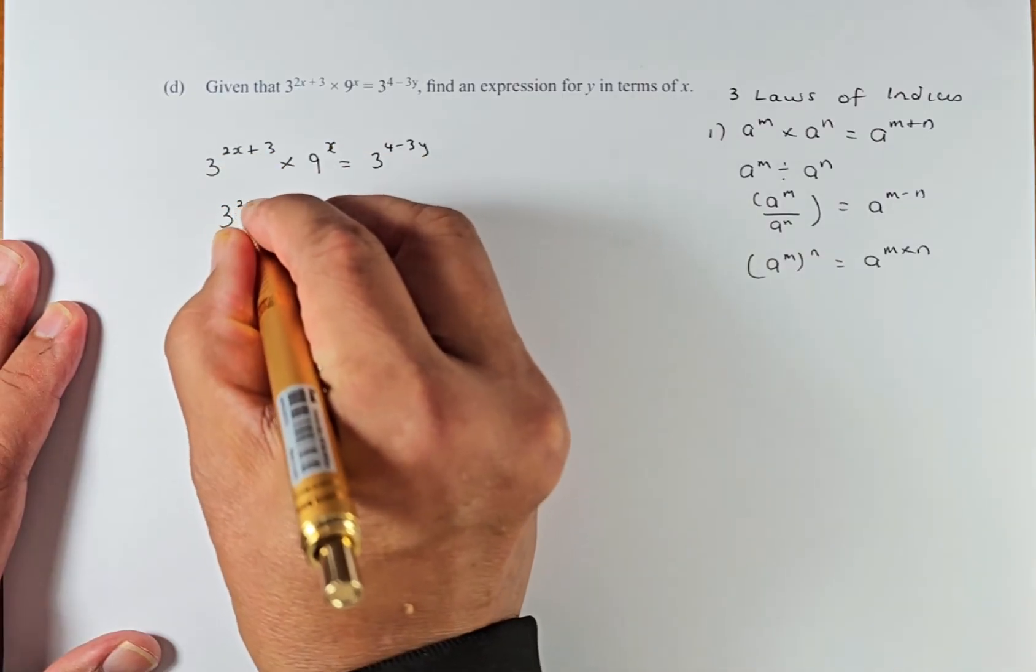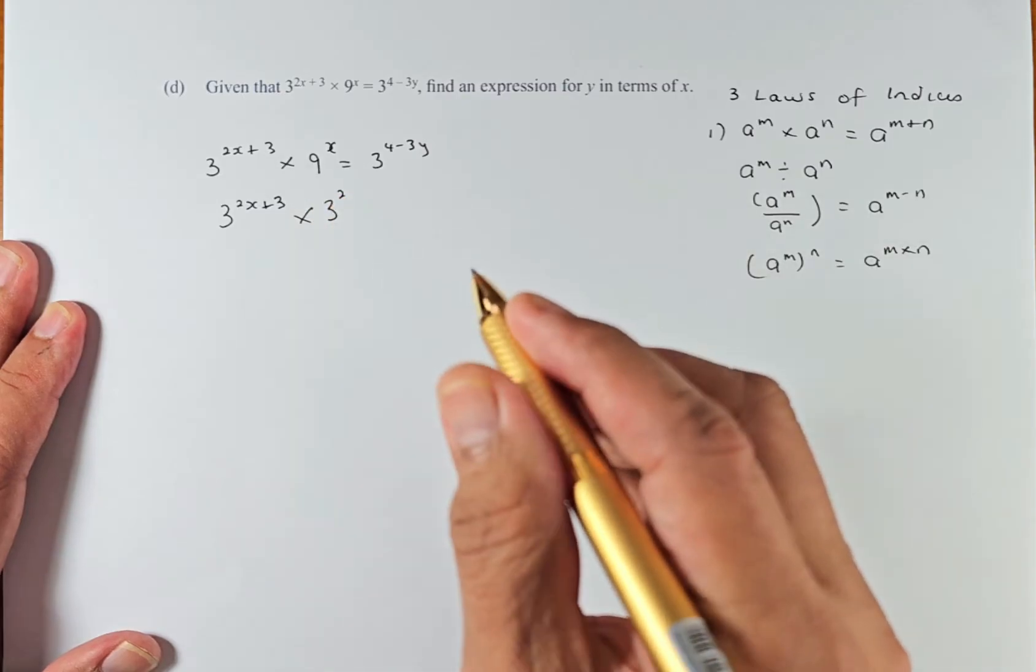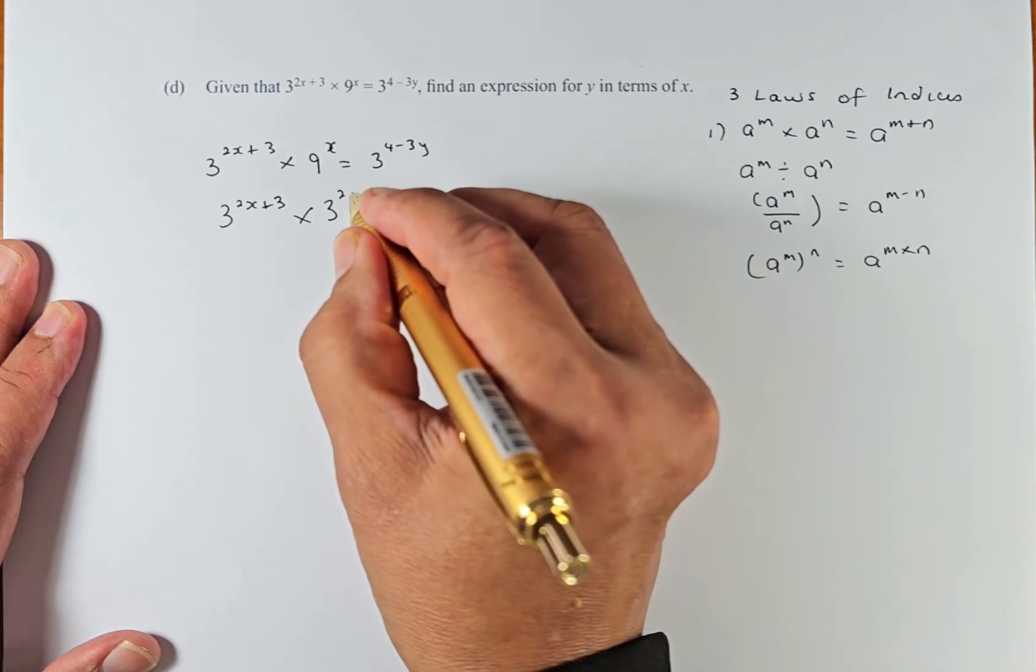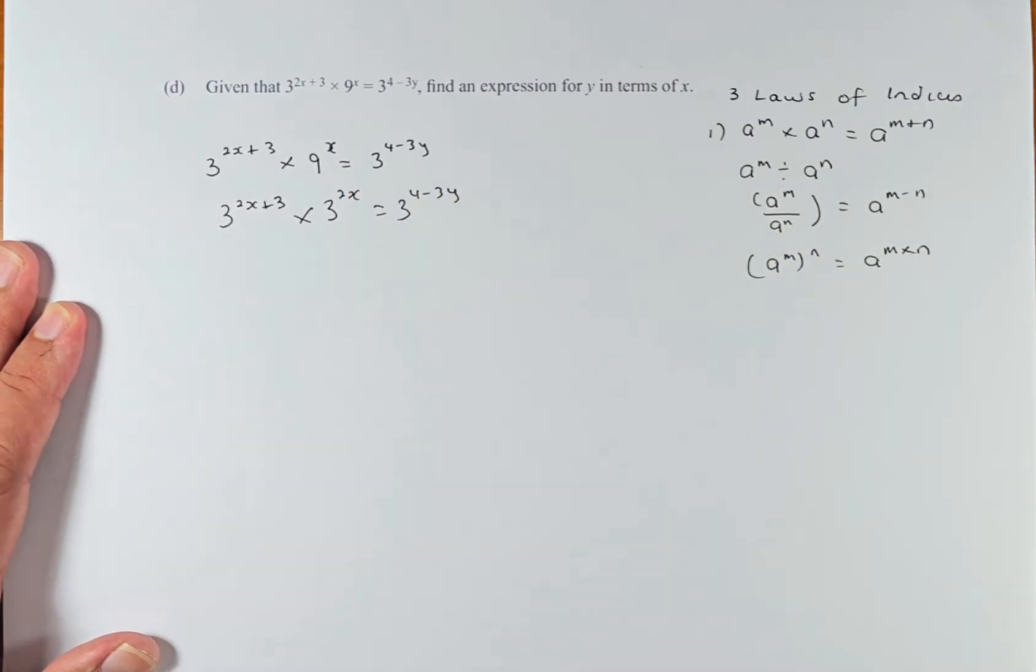This part will remain the same: 3^(2x+3) multiply by 3^2, since 9 is 3^2, then ^x equals 3^(4-3y). Nothing has changed.